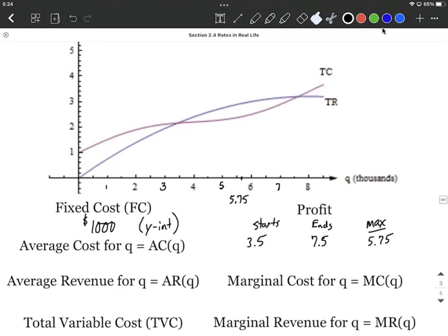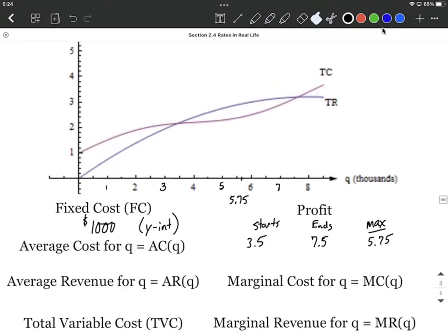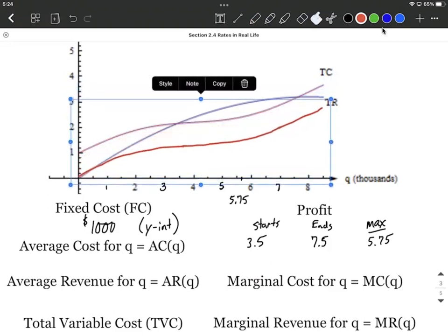Finally, total variable costs. As we take a look at this, the total variable costs are the regular costs. Well, I should say it this way. There are two things that make up our cost graph. Our cost function here, the red one, is made up of both fixed costs and variable costs. So our total variable costs are, if we took away those fixed costs that at the very beginning here we said were a thousand, so if we take away those thousand, it's basically shifting that exact same graph down, and that's the graph of our total variable costs.